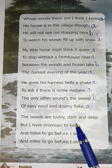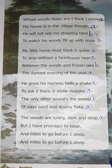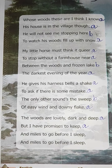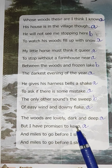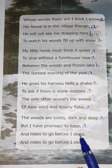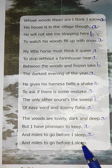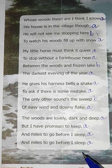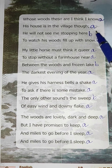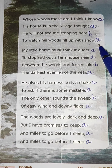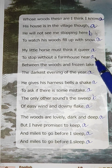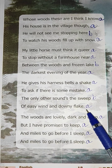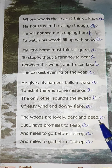Now see the fourth stanza. The words are: deep, keep, sleep, sleep. Deep is marked A, keep rhymes with deep so it is also A. Sleep rhymes with deep and keep so it is A, and the final word also rhymes — so it is A. The rhyme scheme of the fourth stanza is A-A-A-A. So: first stanza A-A-B-A, second stanza A-A-B-A, third stanza A-A-B-A, and the fourth stanza A-A-A-A.